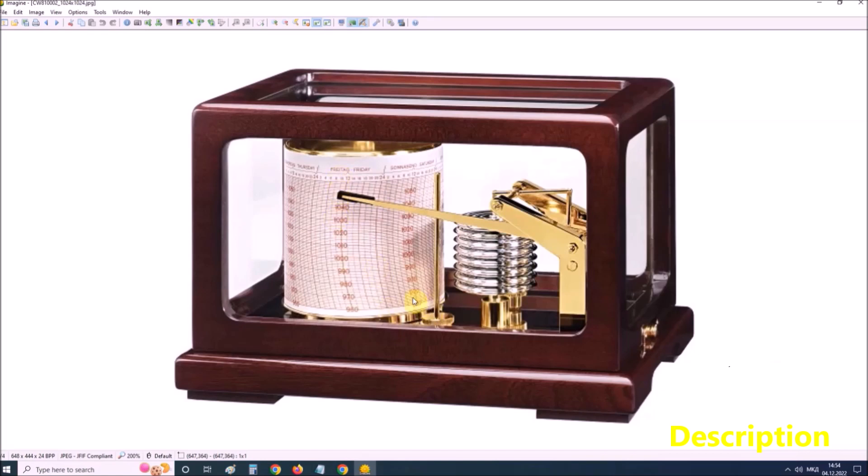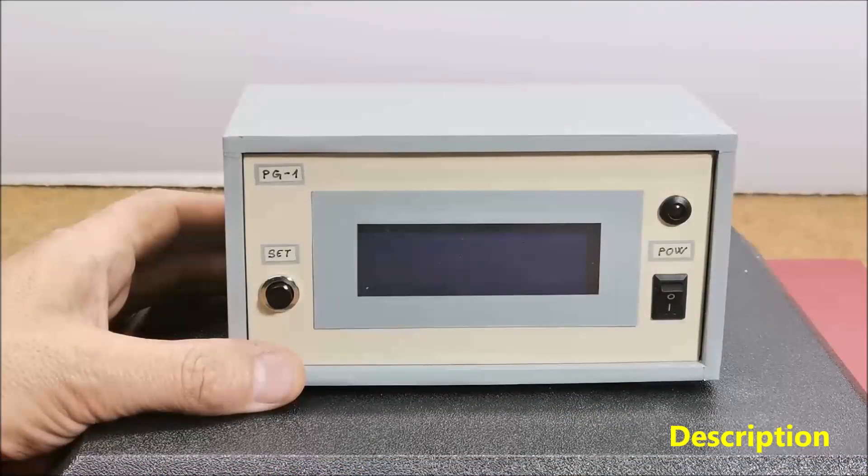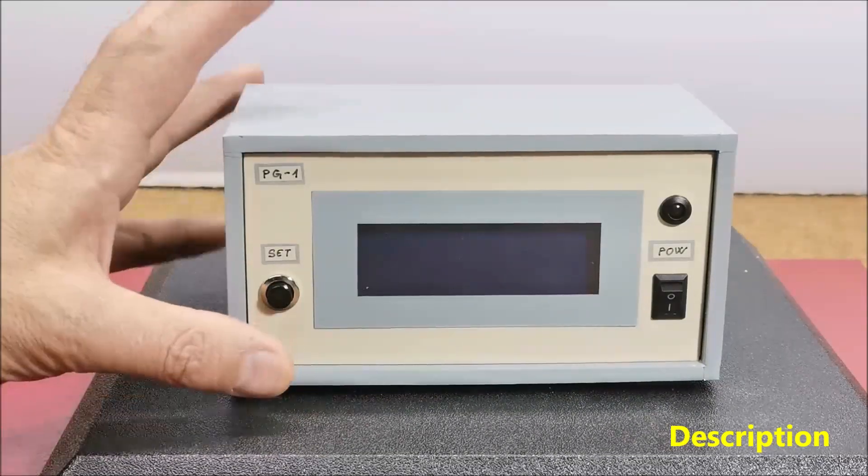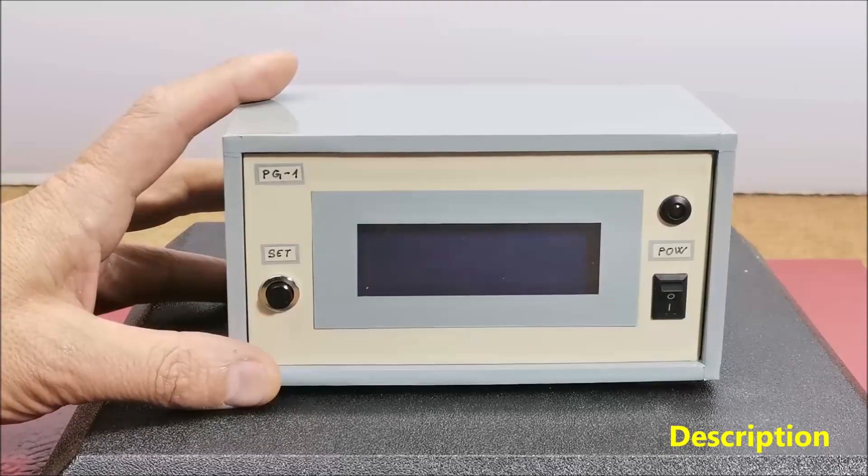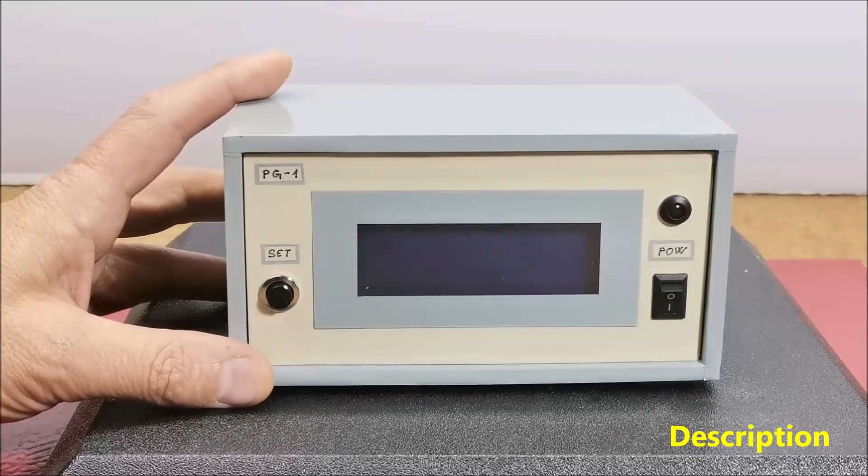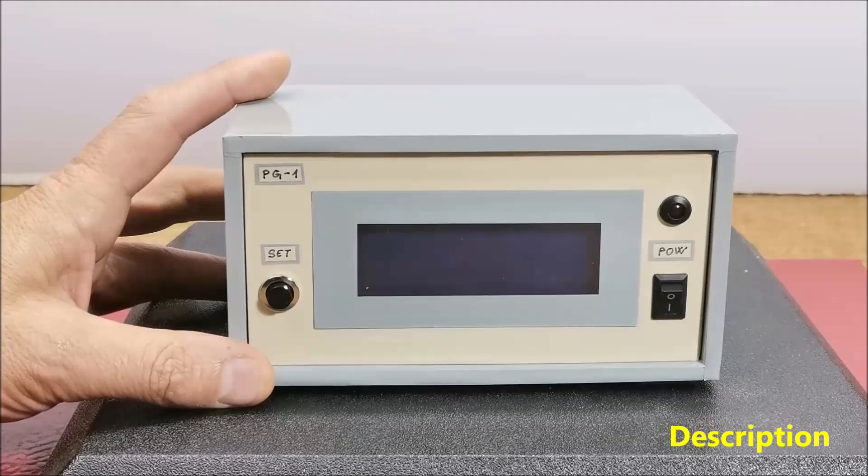This pen marks pressure changes on specially marked paper that is placed on a disk that rotates 360 degrees over 24 hours. The barometer and the barograph are basic local instruments independent of the internet in meteorology that serve to predict the weather.